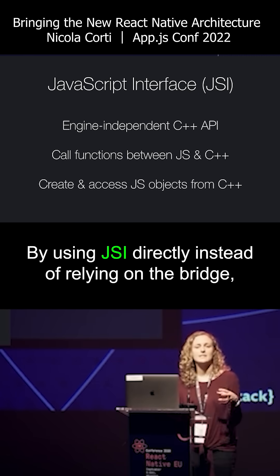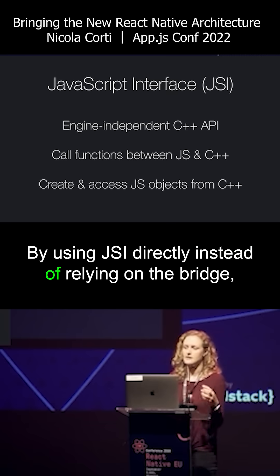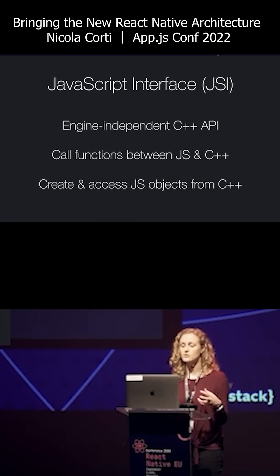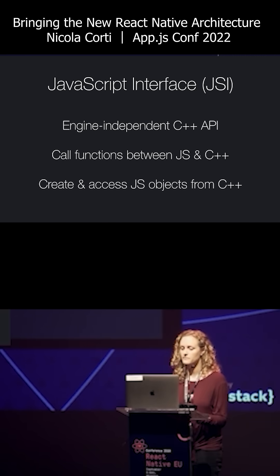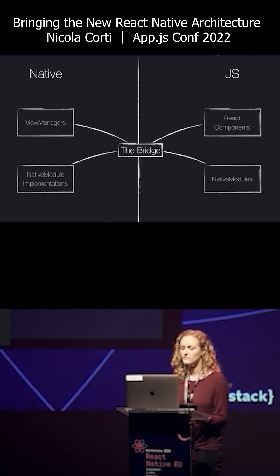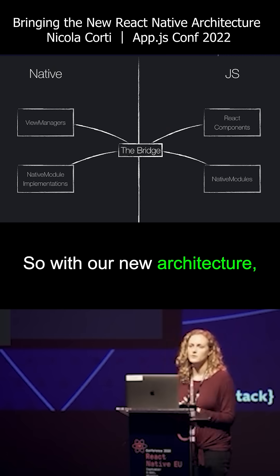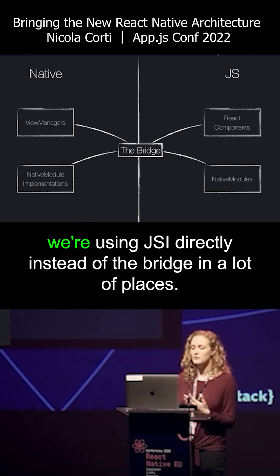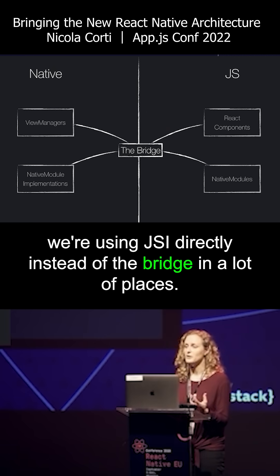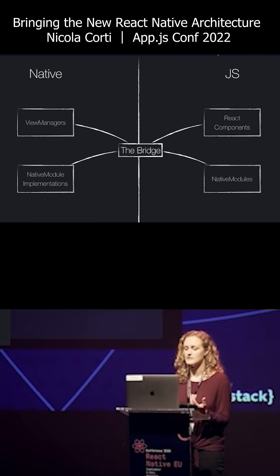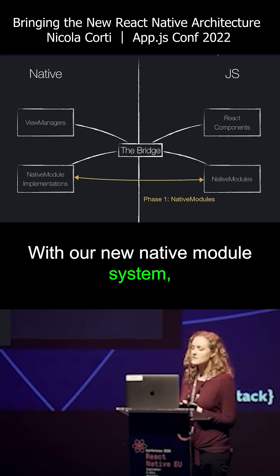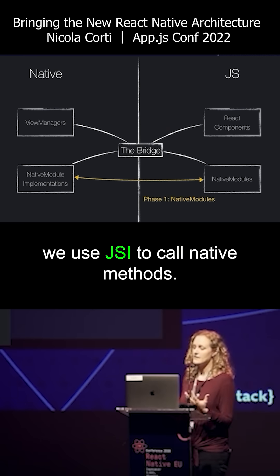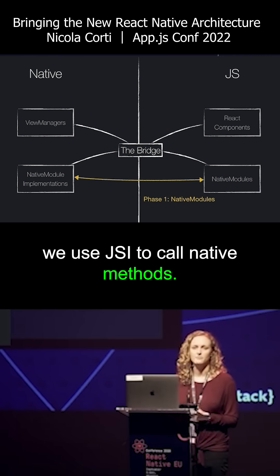By using JSI directly instead of relying on the bridge, we can reduce the overhead for communication between native code and JavaScript. So with our new architecture, we're using JSI directly instead of the bridge in a lot of places. With our new native module system, we use JSI to call native methods.